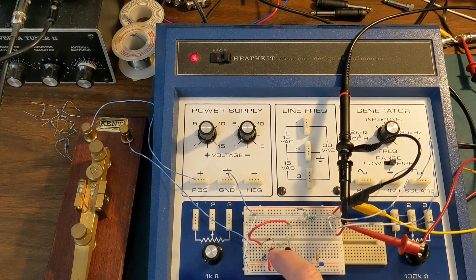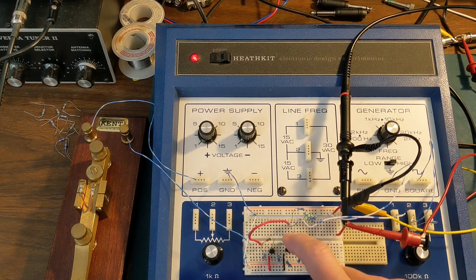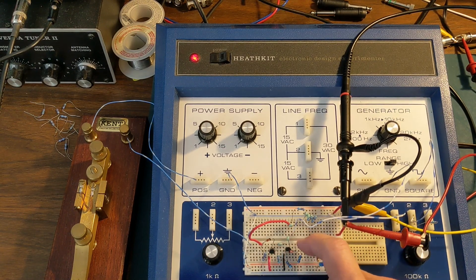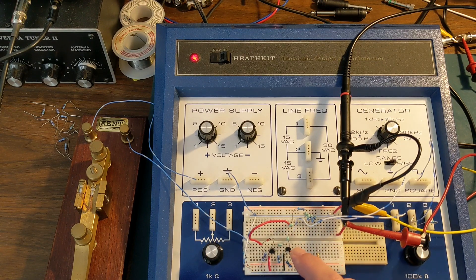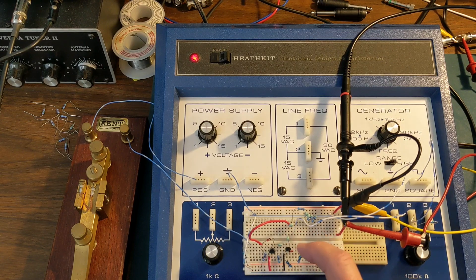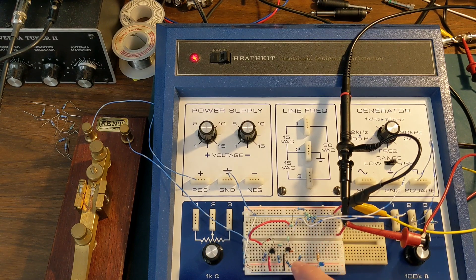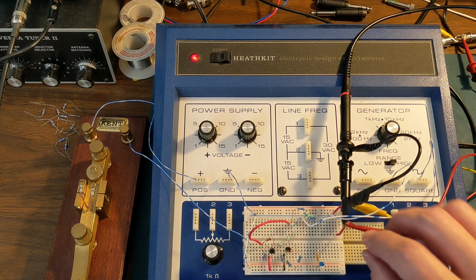It's a two-transistor multivibrator circuit. I didn't want to buy any components. I just found what was in my junk box. I had more of these little 0.1 microfarad capacitors than anything else, so I used them for the multivibrator circuit. The output of that is a square wave.